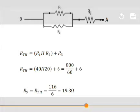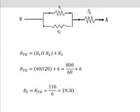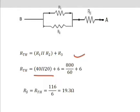RTH equals 40 parallel 20 plus 6, that means 40 into 20 divided by 40 plus 20, plus 6, that equals 800 divided by 60 plus 6. Therefore, RTH equals 800 divided by 60 plus 6, that equals 19.3 ohms.